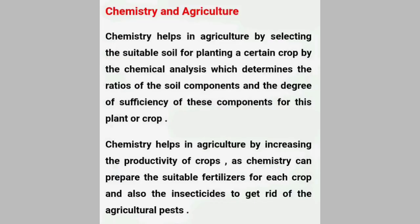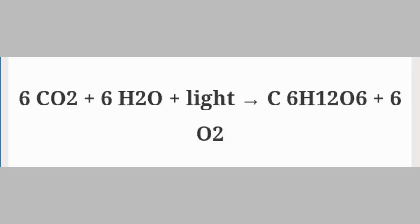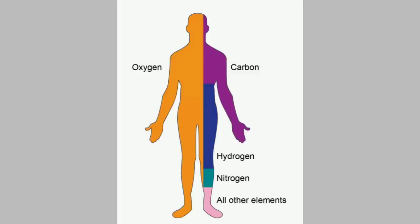In agriculture, chemistry plays the most important role in increasing the productivity of crops. The most important example is photosynthesis — which you have studied in earlier classes. Carbon dioxide, sunlight, and water are all necessary for plants. This is a chemical process through which food and energy are produced, and it is included in the scope of chemistry.